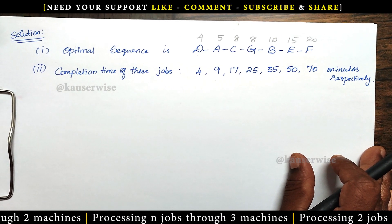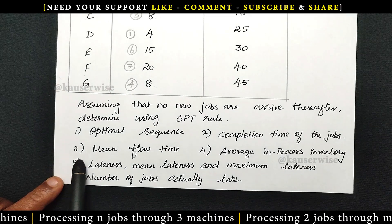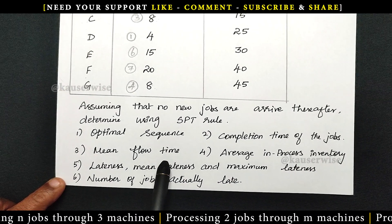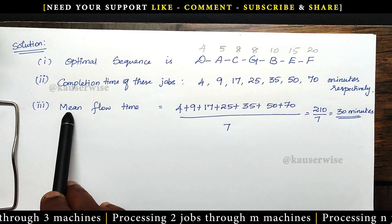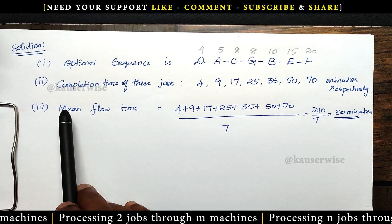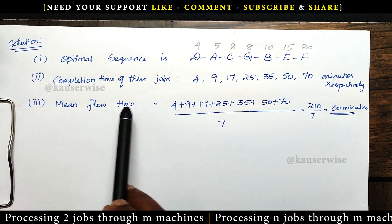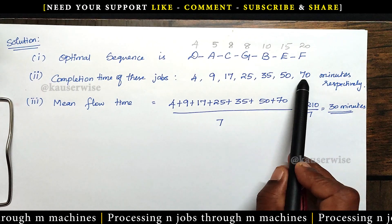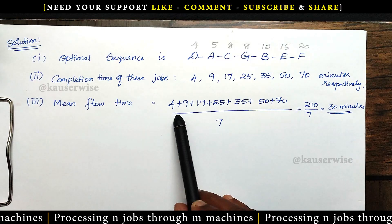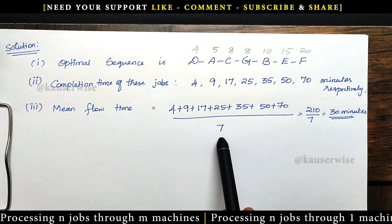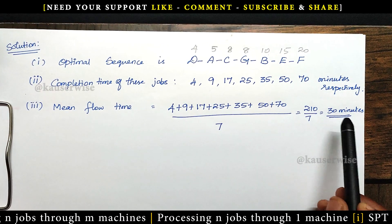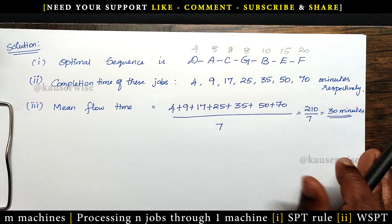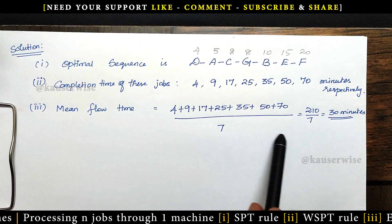The next calculation is mean flow time. In order to find the mean flow time, just add the completion time of each and every job, find out the total, and divide by the number of jobs, which is 7. The mean flow time is 30 minutes for 7 different jobs.